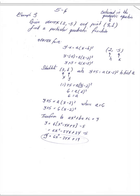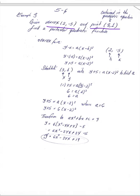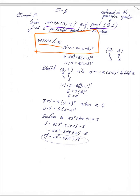For the last example from the book, you're given the vertex and one point and asked to find the equation. You need to remember the vertex form equation: y minus k equals a times (x minus h) squared. The vertex is in the form (h, k), so you find h and k from the given vertex.